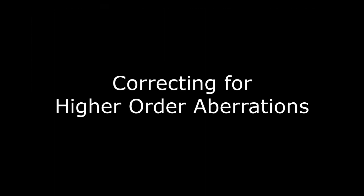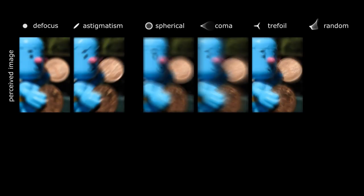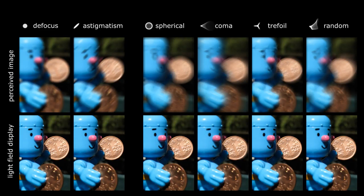Finally, we are also able to correct higher order aberrations. Unlike defocus, higher order aberrations have non-circular point spread functions. Interestingly, a few of them, such as trefoil, can be corrected with conventional displays, but most cannot. Our method successfully corrects all such aberrations.